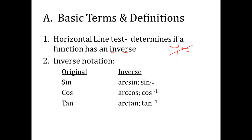If a horizontal line crosses only one place, the function will have an inverse. If it crosses more than one place, there is no inverse. Keeping that in mind, we're going to figure out where our sine, cosine, and tangent graphs have inverses, referring to this horizontal line test.